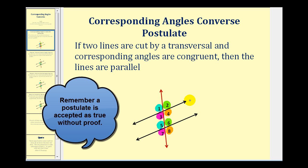So if this is line L and this is line M, we can state that line L is parallel to line M. We can also identify the parallel lines by using arrows — if we use a single arrow on each line, those lines would be parallel.